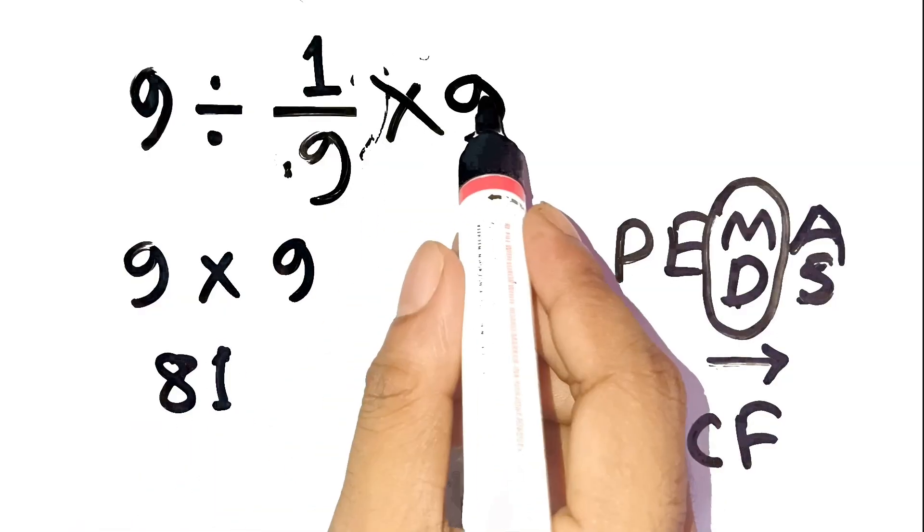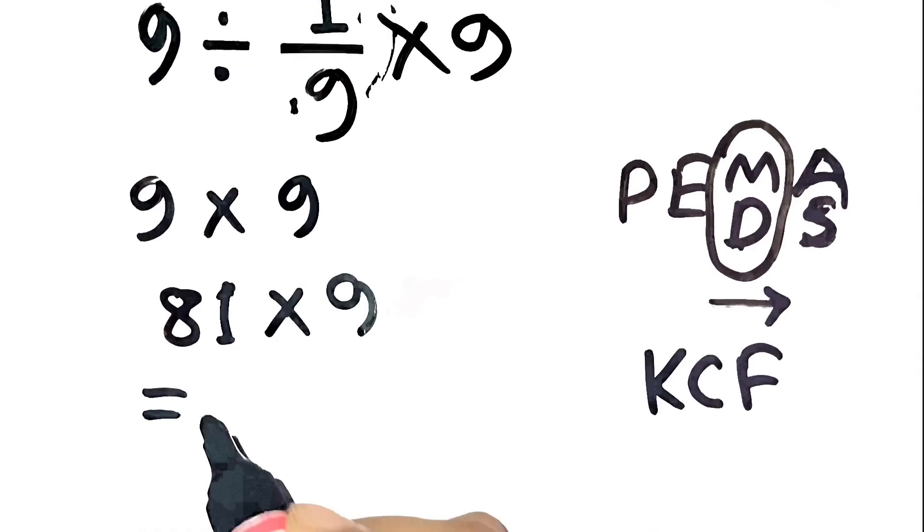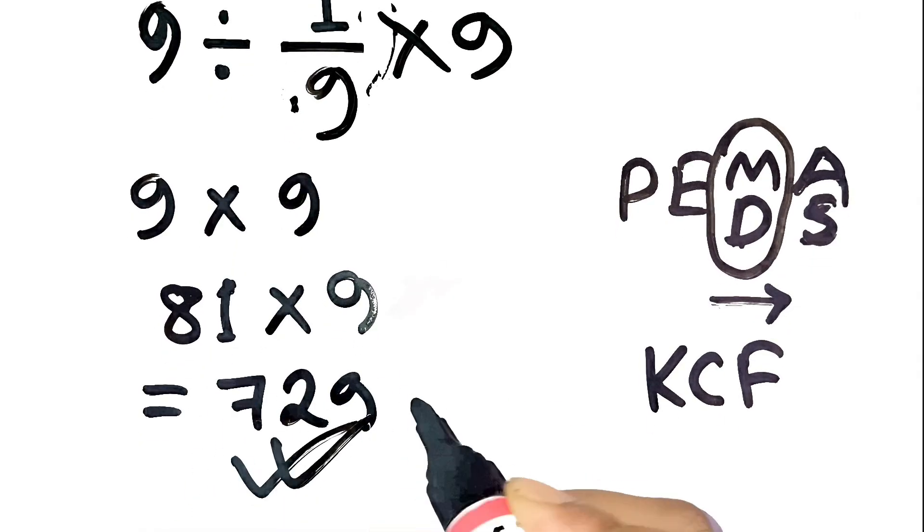Now multiply by the last 9. 81 times 9 equals 729. So the correct answer is 729, not 9.